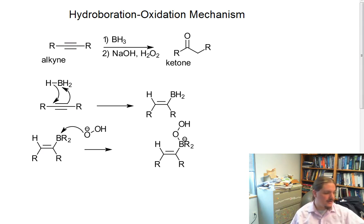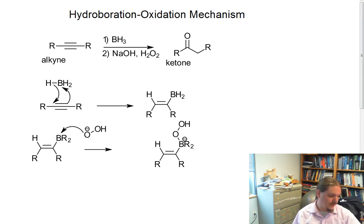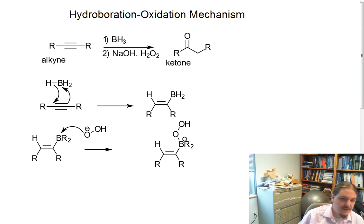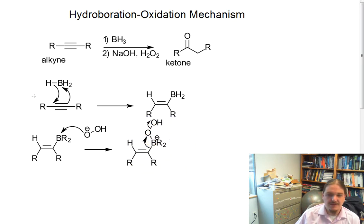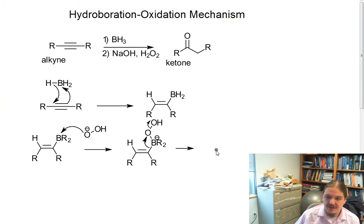In the alkene version, the way that the borine falls apart is through a rearrangement of sorts. What is thought to happen is the carbon-boron bond actually hops over to the oxygen, and the weak peroxide bond breaks. And then you get, instead of a borine, you get a boronate ester.